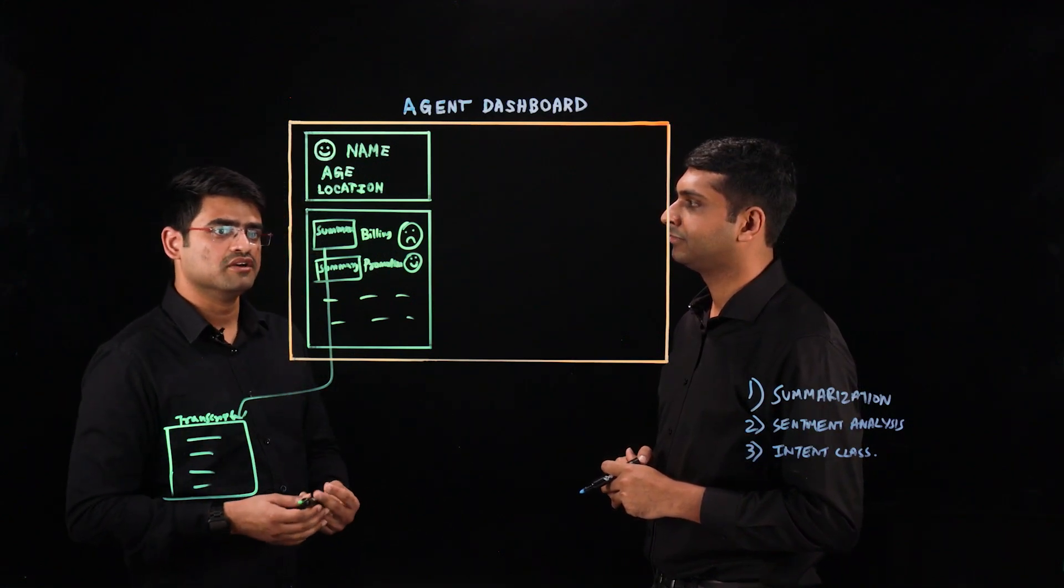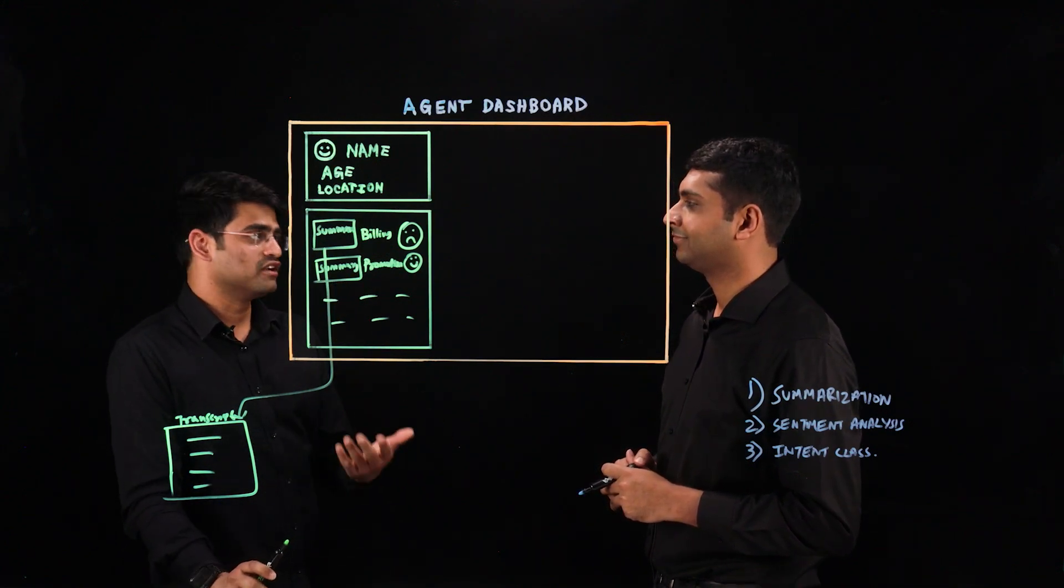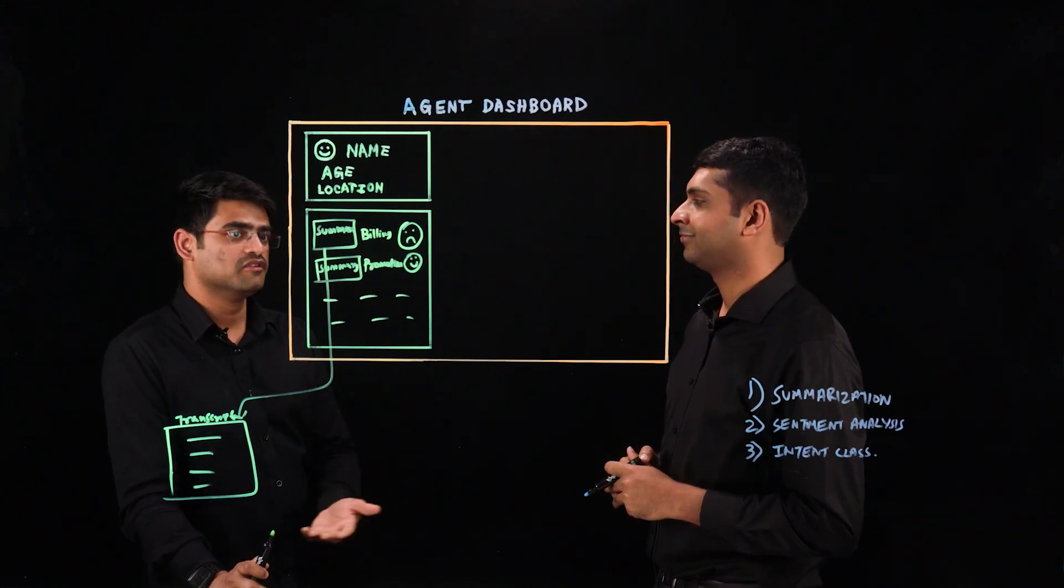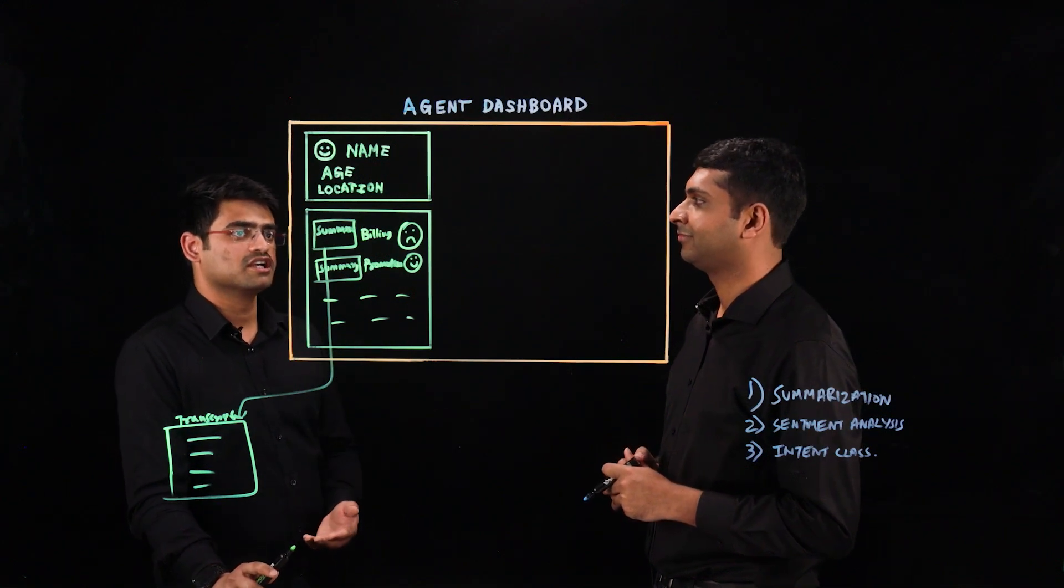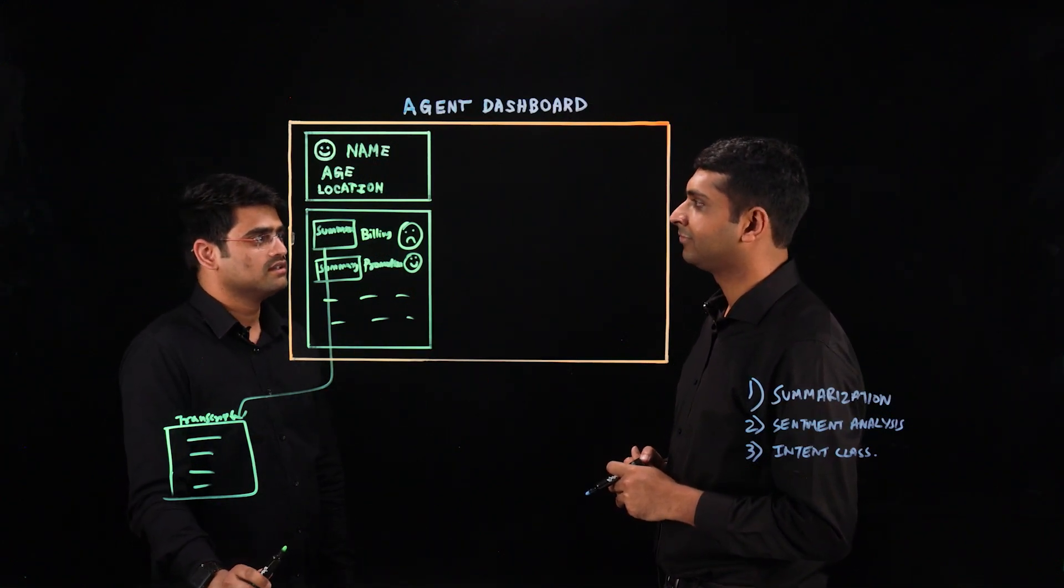knows the summary of previous conversations, why the customer called in the previous instances, and also the kind of experience the customer had. So that'll be good information to have when the agent is talking to the customer so that he can tread carefully when talking to that specific customer. That'll be helpful.